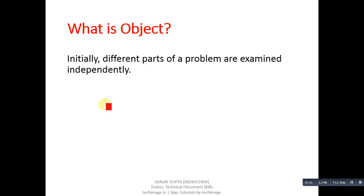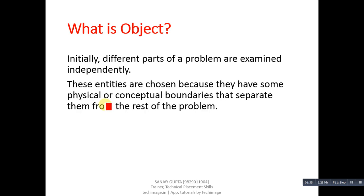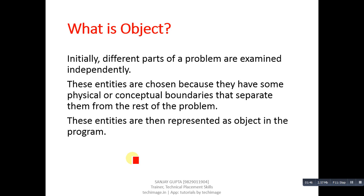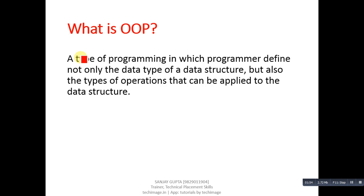Next question: what is an object? Initially, different parts of a problem are examined independently. These entities are chosen because they have some physical or conceptual boundaries that separate them from the rest of the problem. These entities are then represented as objects in the program.